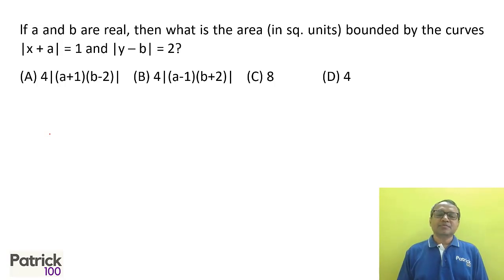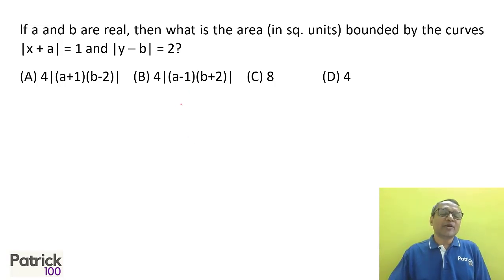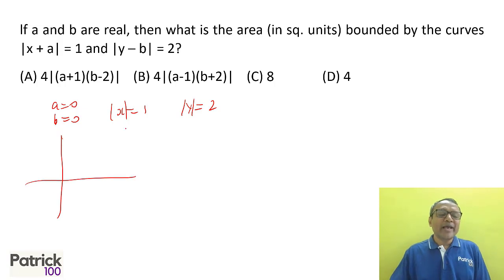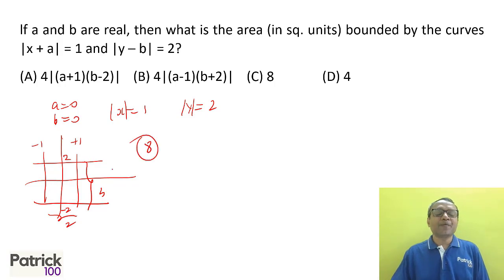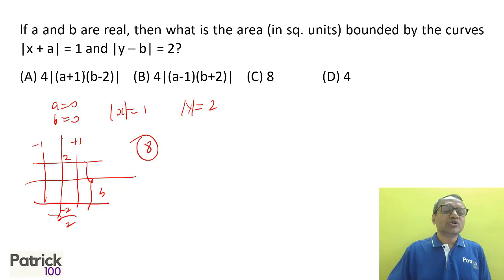Whenever you have variables, substitute simple values. Put a = 0, b = 0: x = 1, y = 2. Plotting on a graph: x ranges from −1 to +1 (length = 2), y ranges from −2 to +2 (length = 4). Area of the rectangle = 2 × 4 = 8. So when a = 0 and b = 0, the answer should be 8. Checking option A: 4 × 1 × 2 = 8. Option B also gives 8.